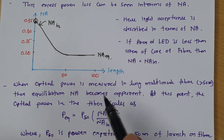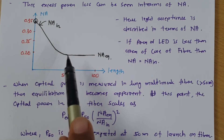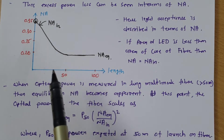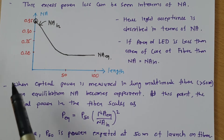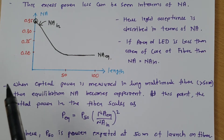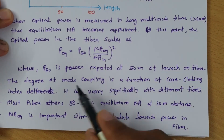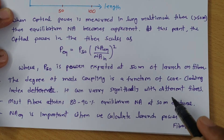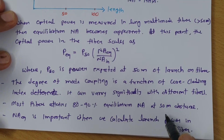The agenda here is that this excess loss of power becomes zero as you move beyond 50 meters, and this excess loss is more for short length of fiber. So when communicating over short distance with multimode fiber, this excess loss due to scattering of light is very important. The degree of coupling is a function of core grading refractive index difference and can vary significantly with different fibers. Most fibers attain 80 to 90 percent equilibrium numerical aperture at 50 meters distance.